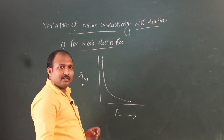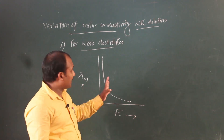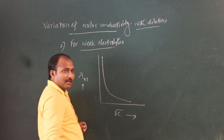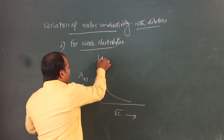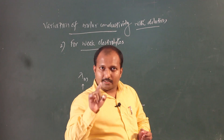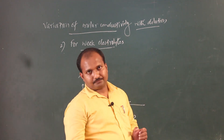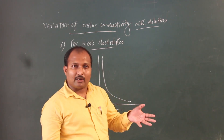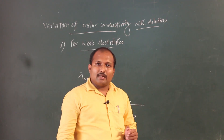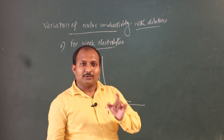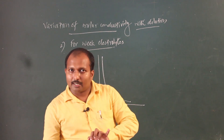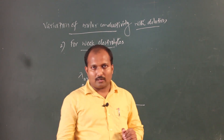For the graph of weak electrolytes, we have the y-axis as molar conductivity and the curve is extrapolated. However, the curve becomes almost parallel to the y-axis near zero concentration. In the case of weak electrolytes, the value of λ⁰_m (limiting molar conductivity) cannot be calculated from the graph by extrapolation. Note that the Debye-Hückel-Onsager equation is obeyed by strong electrolytes only.